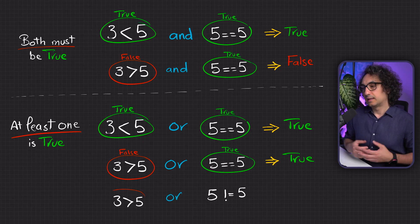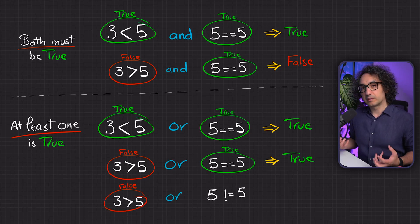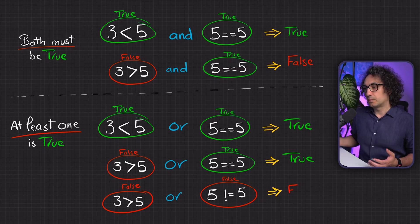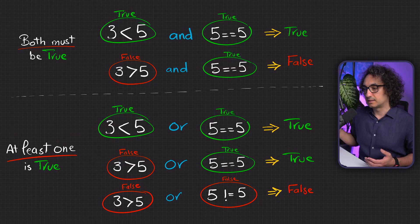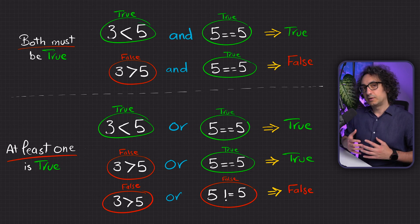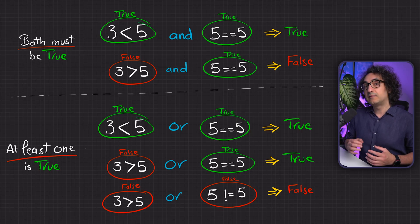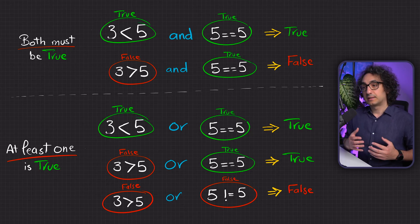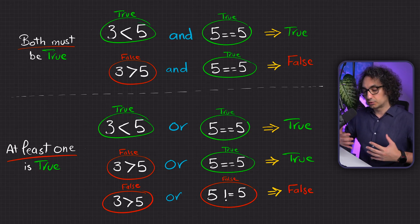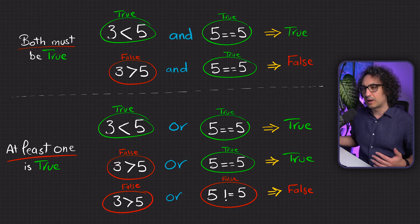Now another example: is three bigger than five, and is five not equal to five? Both conditions return false. With the 'or' operator we need at least one true, but we have none — so we get false. This is the only scenario where 'or' returns false: when both conditions are false. In summary, 'and' returns true only if both are true; 'or' returns true if at least one is true.